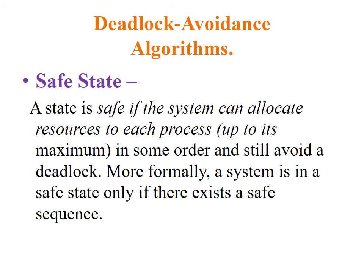In this situation, if the resources that Pi needs are not immediately available, then Pi can wait until all Pj have finished. When they have finished, Pi can obtain all its needed resources, complete its designated task, return its allocated resources, and terminate. When Pi terminates, Pi+1 can obtain its needed resources, and so on. If no such sequence exists, then the system state is said to be unsafe, which is called an unsafe state.